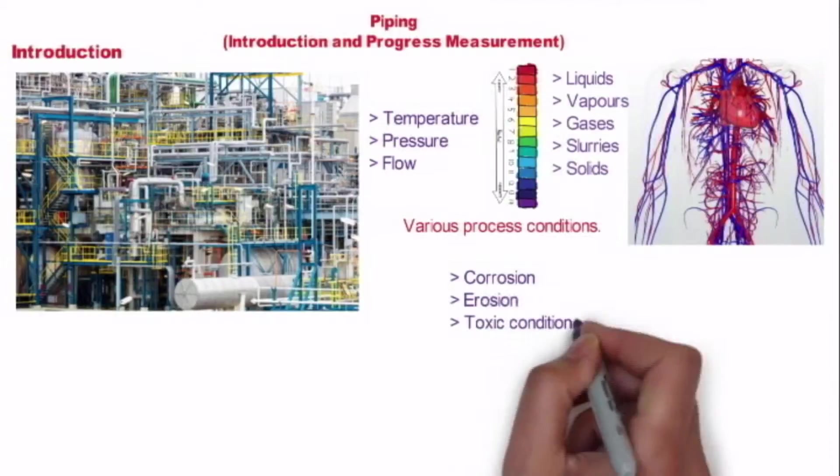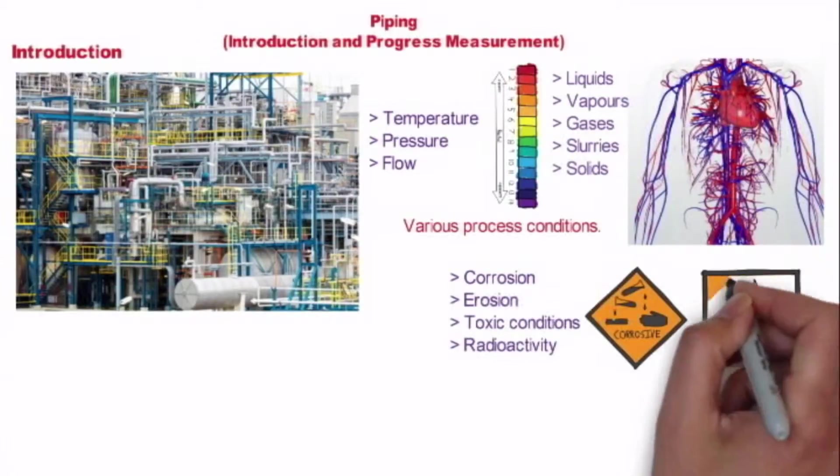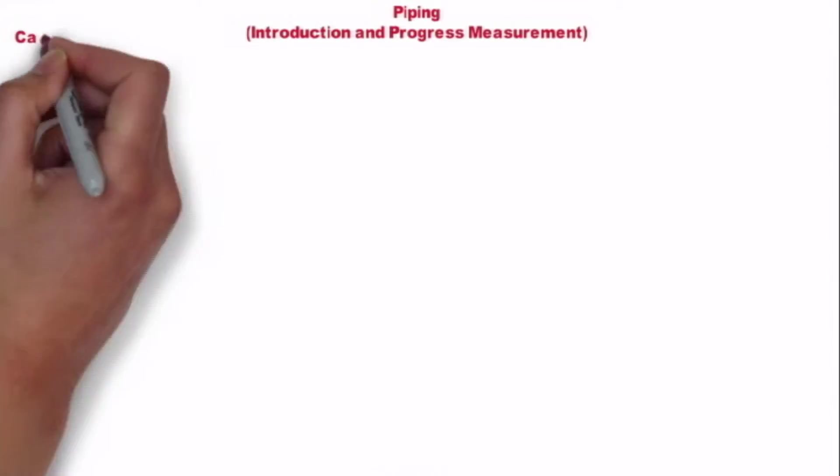Plant should be designed in such a way that plant can have trouble-free operation over a long or design period of time. As far as capital cost is considered, piping forms a large portion of investment in the plant, exceeded only by the major equipment.